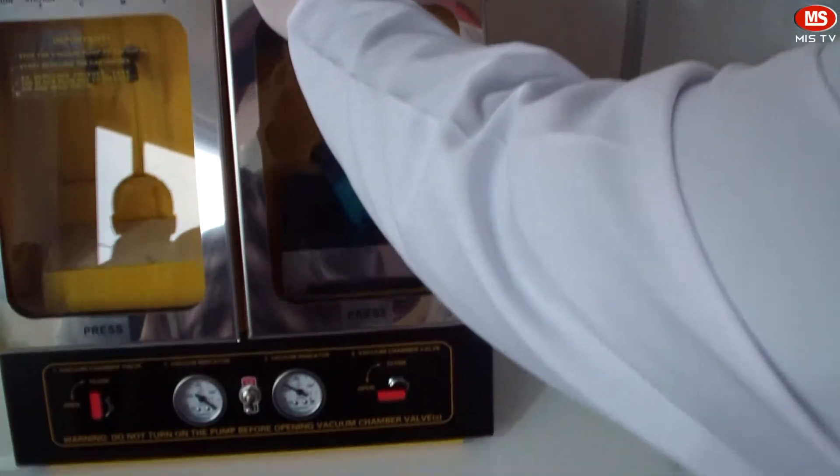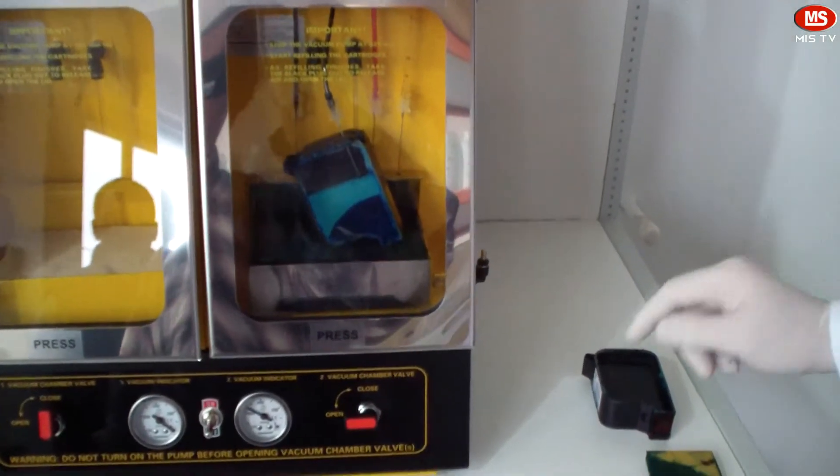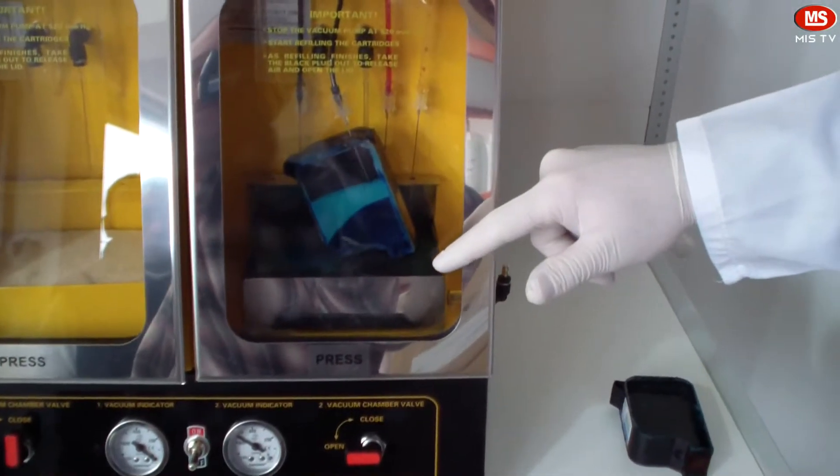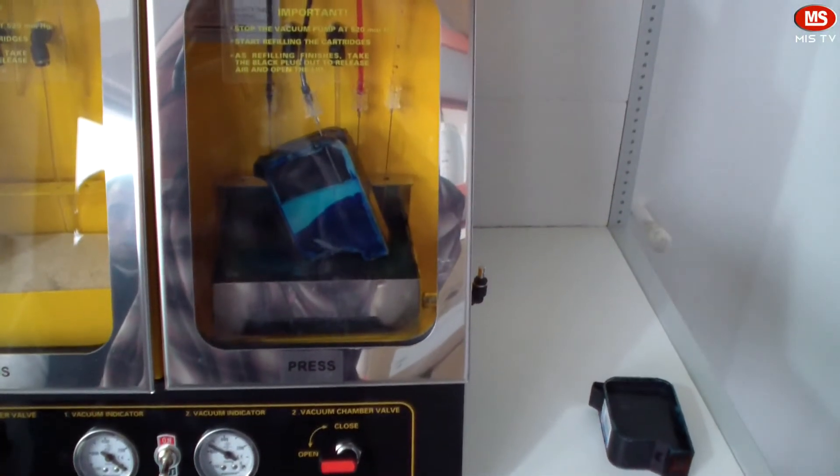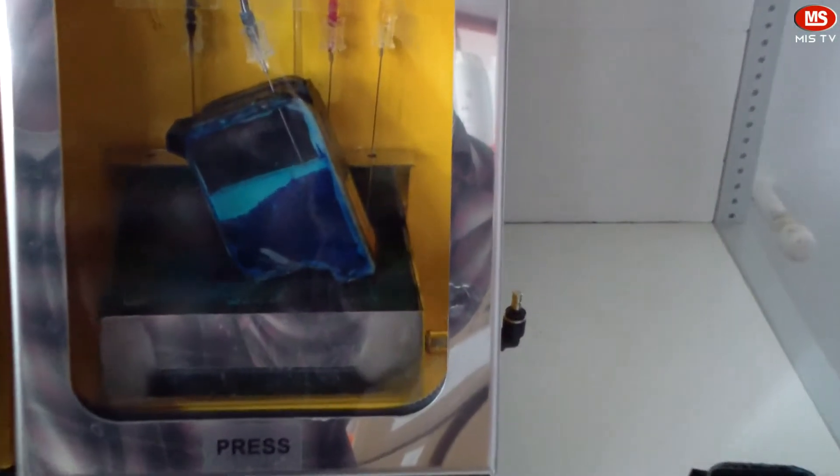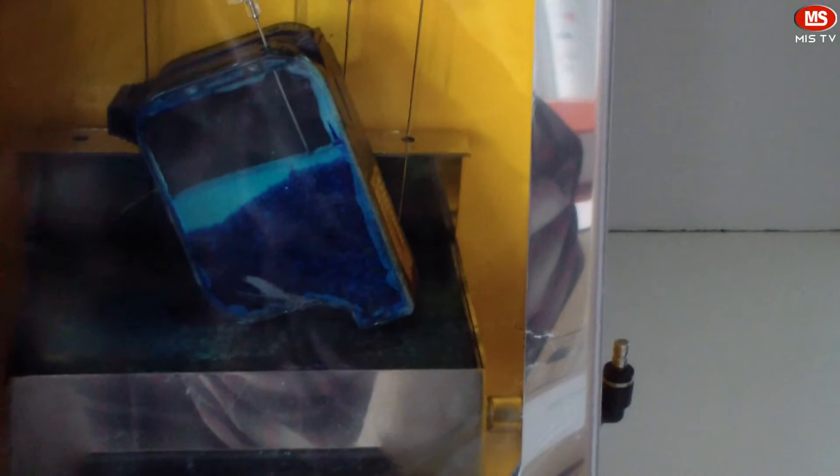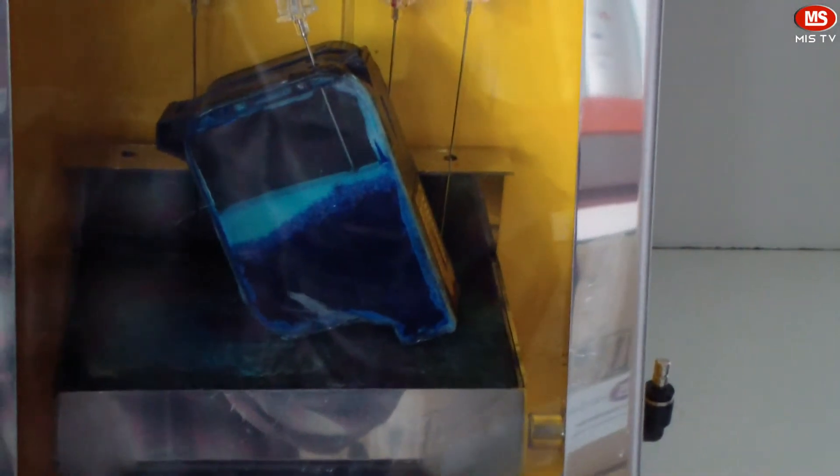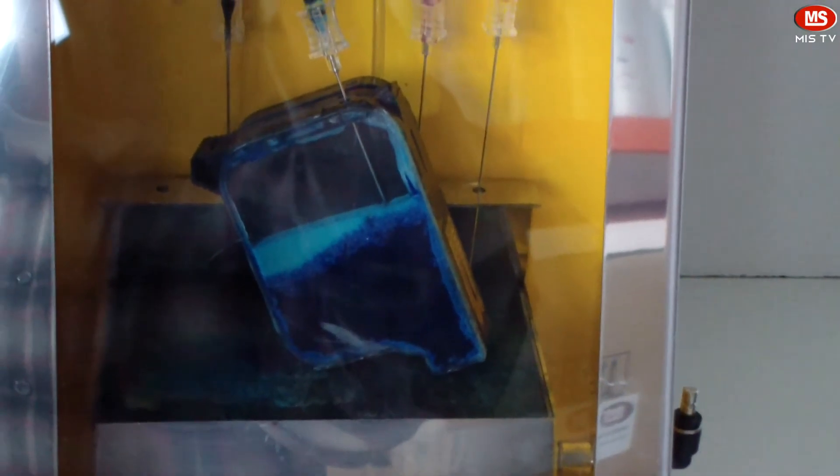Then we push the button to transfer the ink. As you see, just like fabricated filling, the ink is filled starting from bottom to upwards. When we release the vacuum, there occurs a compression from top to bottom without leaving any air bubble inside the foam.